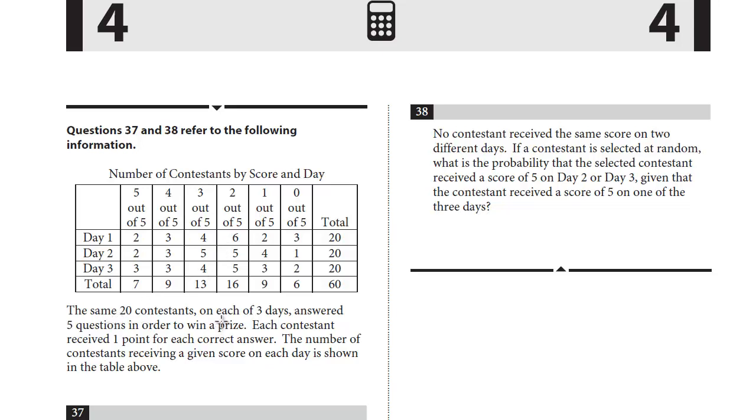The same 20 contestants on each of three days answered five questions in order to win a prize. Each contestant received one point for each correct answer. The number of contestants receiving a given score on a day is shown in the table above. So let's take a look at the first question.